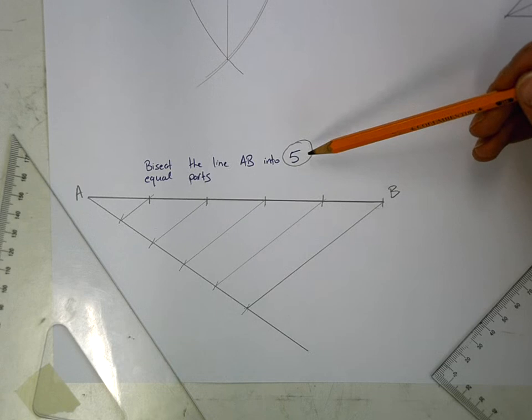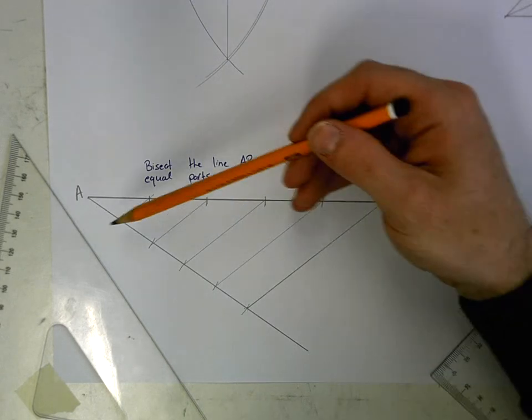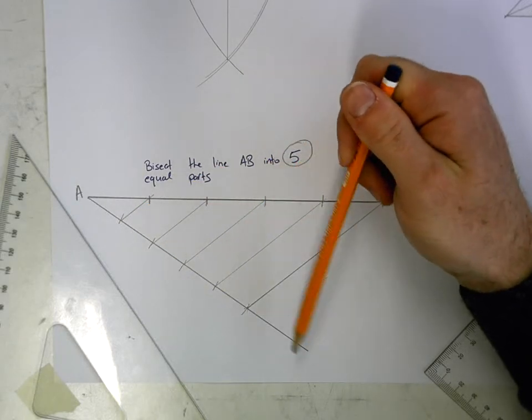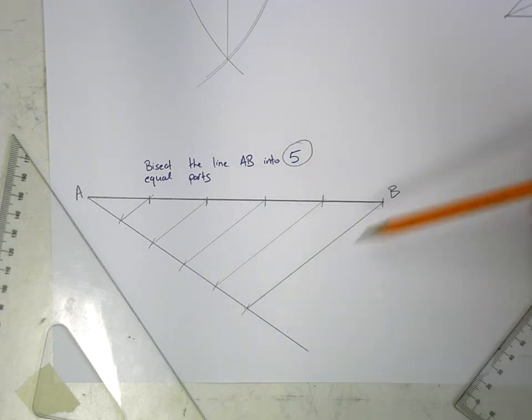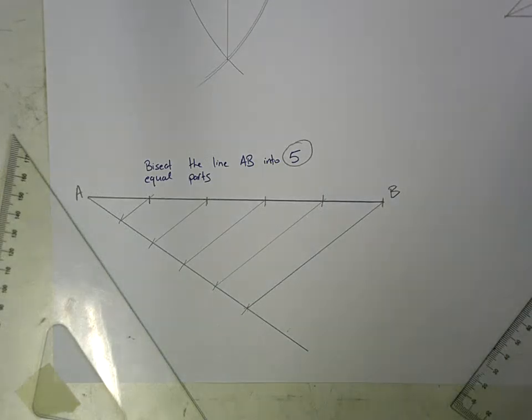If a question asks you to split it up into seven parts, all you would do differently is you would do seven marks along this line, and again join the last one to your end point and do exactly the same process.